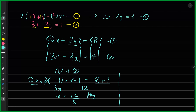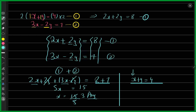Now find the value of y using the original equation x plus y equals 4. Plugging in x equals 3: 3 plus y equals 4, so y equals 4 minus 3, which gives y equals 1. So the solution is x equals 3 and y equals 1. A student correctly pointed out that 8 plus 7 is 15, not 12 — thank you for that correction.